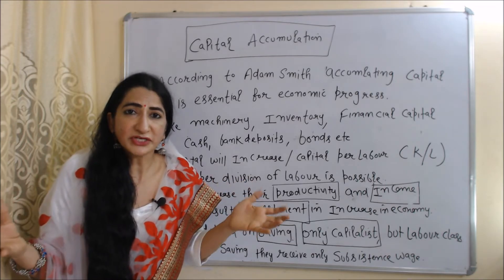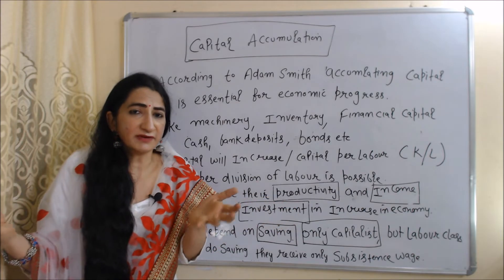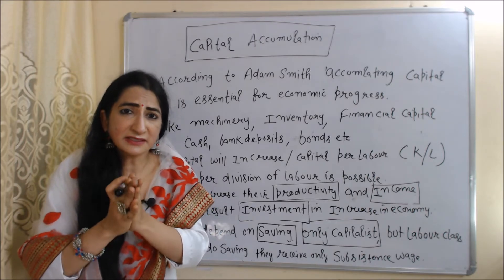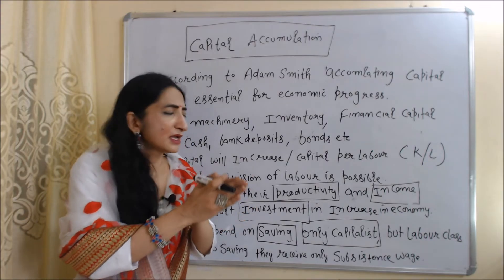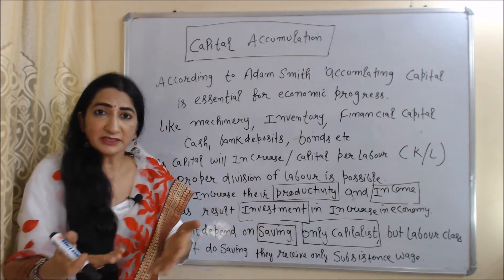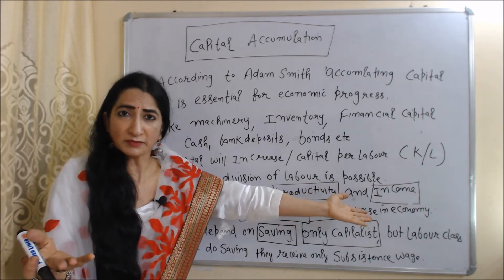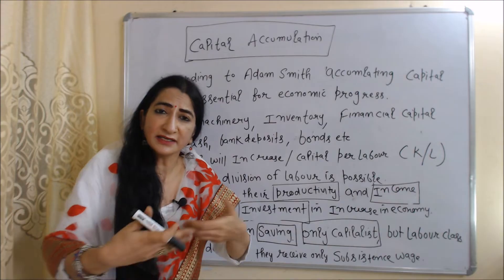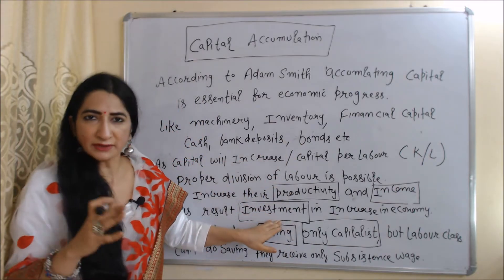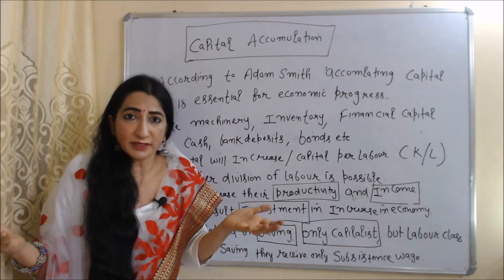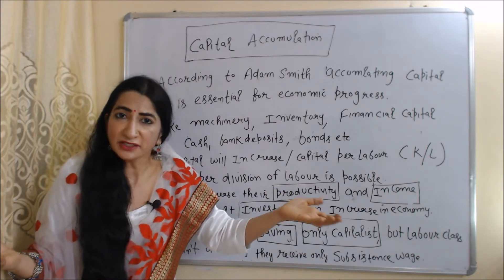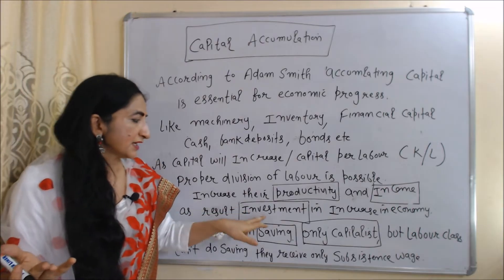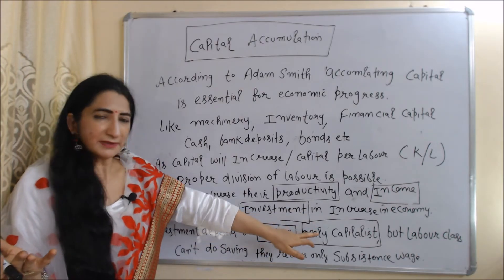As more machinery is available for labor, proper division of labor becomes possible. Workers work according to their specialization, so their productivity increases, wages increase, and income in the economy increases. As income increases, demand increases, sales of businesses increase, and businesses will increase investment. As investment increases, output, employment, and national income will also increase, and eventually the economy moves towards economic growth.